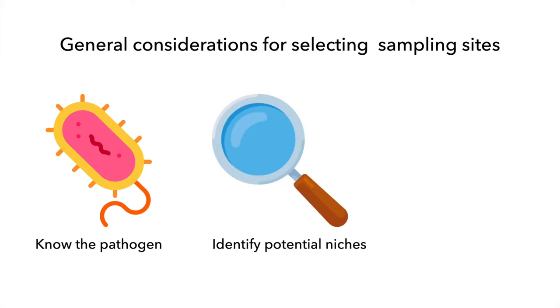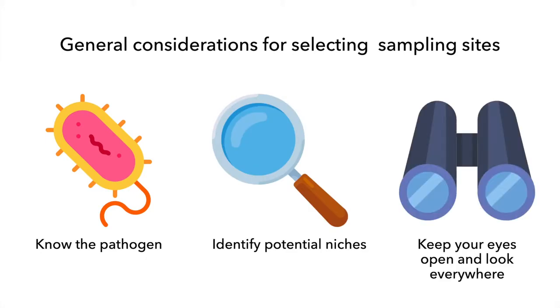There are three main things you must do when selecting sampling sites: know the pathogen, identify potential niches, and keep your eyes open and look everywhere. Let's look into these three areas more closely.